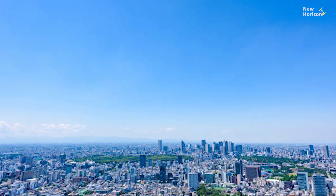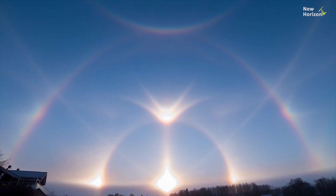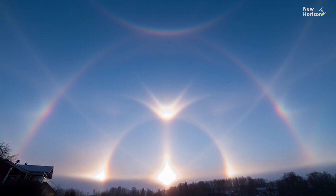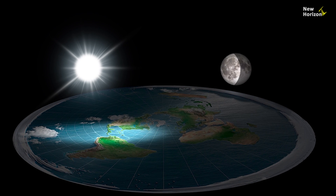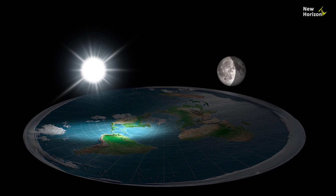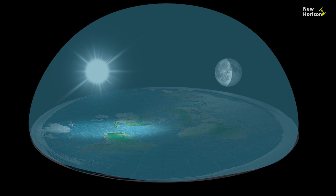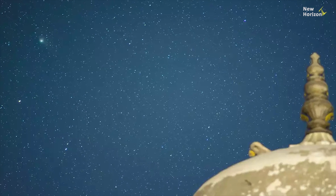Some flat earthers claim that the blue hue of the sky is the color of the dome. However, if this was the case, we wouldn't see the sky's color shift during sunrise and sunset. Additionally, in the flat earth model, the Sun is always positioned in front of the dome, which suggests the sky should appear blue at night too.